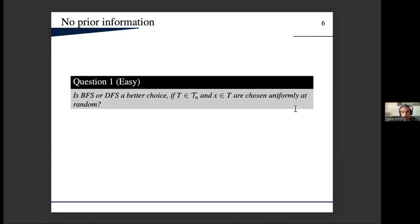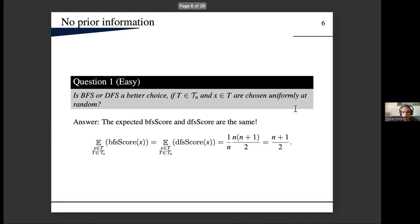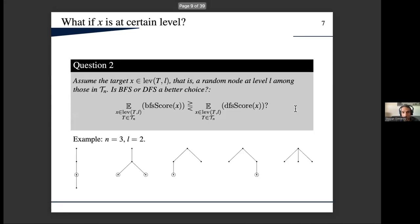As I said, we want to compare the two algorithms. So here comes the first pretty easy question. If my target node is chosen uniformly at random among all the nodes in all these trees, then which of the two algorithms will be better in expectation? Well, it turns out the answer here is trivial because we basically put the labels 1 to n in some order on our nodes. Since each node has the same chance to be selected as the target, we basically have the same expectation.